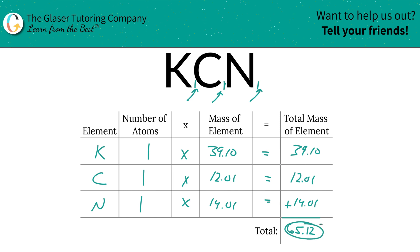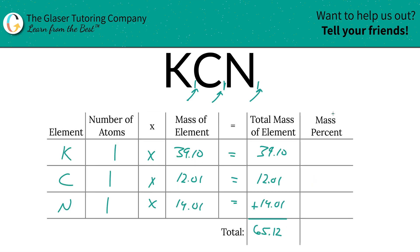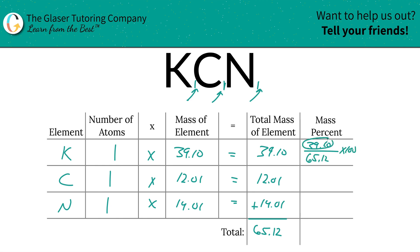That's the first step of the problem — to find the total mass of the compound, which we have done. Now I'm simply going to add a column to this table to help us calculate those percents. To find the mass percent of potassium, we're simply going to take the total mass of potassium, 39.10, and divide it by the total mass of the entire compound, 65.12, and multiply that by 100. That is a simple percent calculation: part over whole times 100.